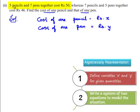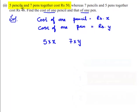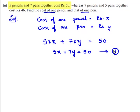5 pencils and 7 pens together cost 50 rupees. The cost of 5 pencils is 5 multiplied by x, and the cost of 7 pens is 7 multiplied by y. Both of them together is 50 rupees, so we can write 5x plus 7y is equal to 50. This is the first equation.